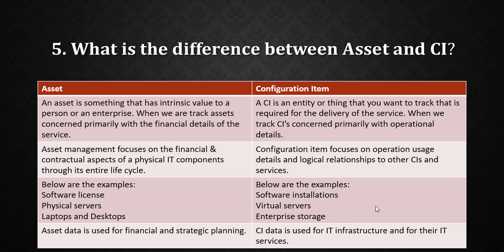The next question is: what is the difference between Asset and CI? This is one of the most important questions — in most interviews, the interviewer will definitely ask about the exact difference between Asset and CI. CI means Configuration Item. An asset is something that has intrinsic value to a person or enterprise.